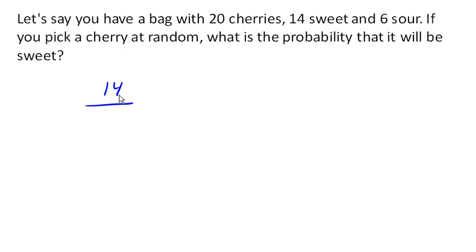Out of how many possible outcomes? Well, there's 20 possible cherries that we could have picked, so there's a 14 out of 20, or 7 out of 10, or if you wanted to, you could also say 70% chance, or probability that our cherry will be sweet.